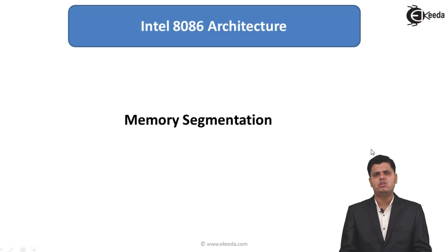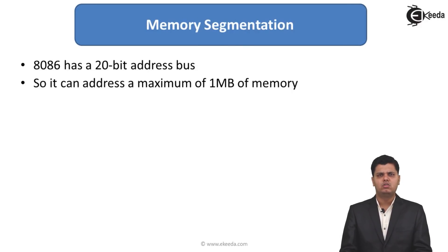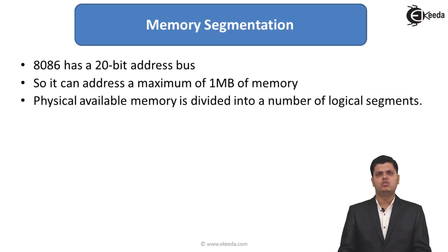Now we are going to see one of the important concepts of the 8086 microprocessor, that is memory segmentation. As we know, the 8086 has a 20-bit address bus. From this 20-bit address bus it can address 1 megabyte of memory, since 2 raised to the power 20 equals 1 megabyte.